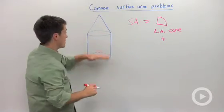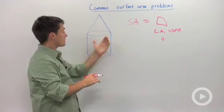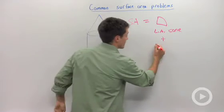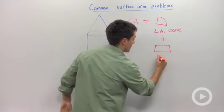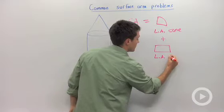Then you're going to add in, not the base of the cone, but the lateral area of the cylinder, which is a rectangle. So I'm going to add in the lateral area of the cylinder.